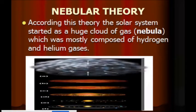And here, class, the nebular theory are called the nebular hypothesis. So, according to this theory, class, the solar system started as the huge cloud of gas, and that's called the nebula, which mostly composed of hydrogen and helium gases.